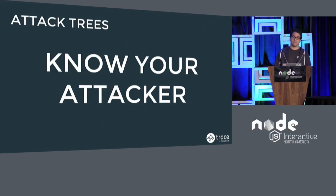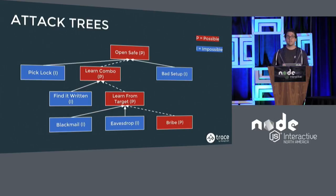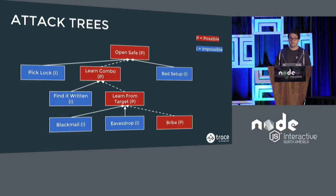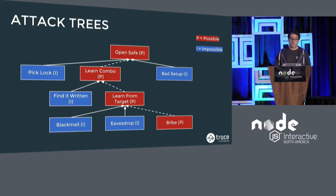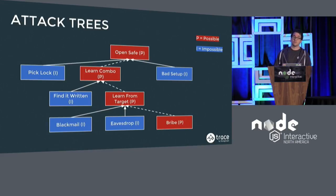What we can do here is modify the attack tree to reflect that. I marked with P in red the possible paths from an attacker's point of view, and blue means that it's impossible for a given attacker. So in this case, the happy path from an attacker's point of view is to open the safe by learning the combo, by learning it from the target, and by bribing him. This means that you should protect yourself against this attack tree, because this is what's possible from an attacker's point of view.